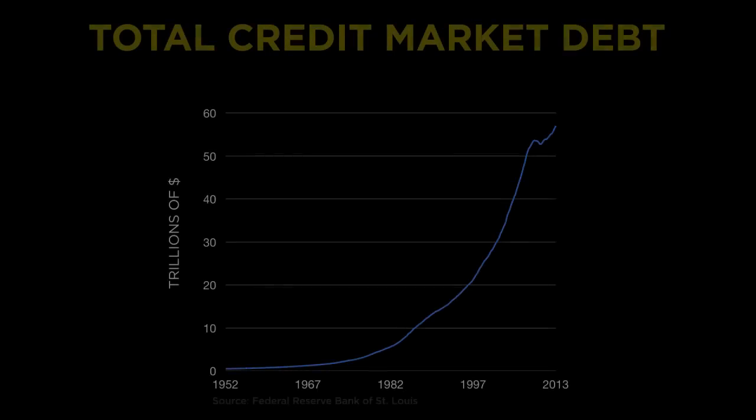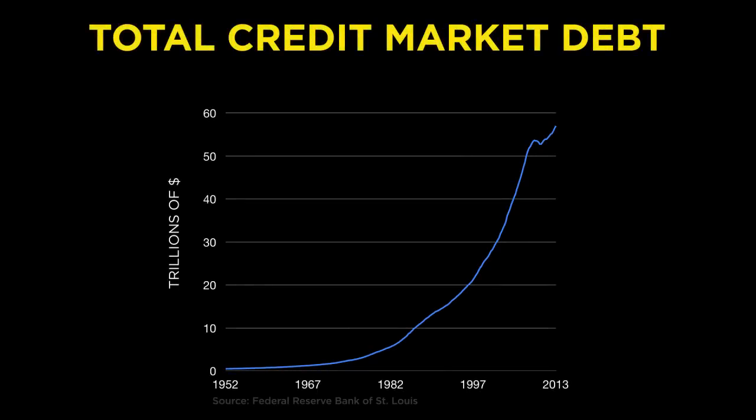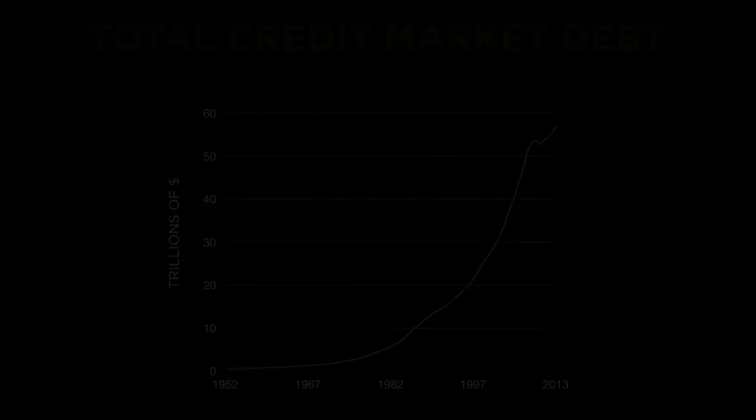As we learned in the prior chapter on debt, the United States has an historic, never-before-seen level of debt on the books. Now, some would say that it's not reasonable to look only at debt. One also has to consider the assets and total liabilities to assess the situation.